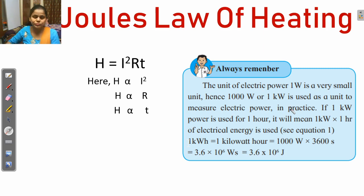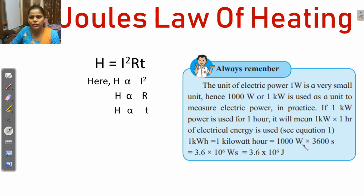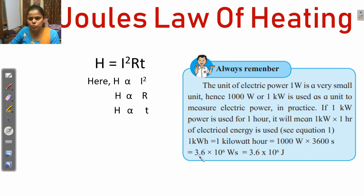In practice, if 1 Kilowatt of power is used in 1 hour, it means 1 Kilowatt into 1 hour of electrical energy is used. 1 kWh equals 1000 Watts multiplied by 3600 seconds, because 1 hour equals 60 minutes and 1 minute equals 60 seconds, so 1 hour equals 3600 seconds. This gives us 3.6 × 10⁶ Watt-seconds, or Joules.